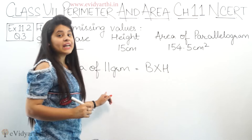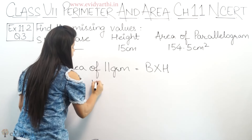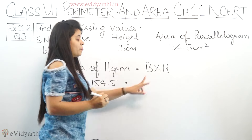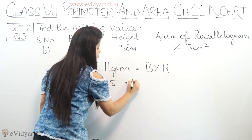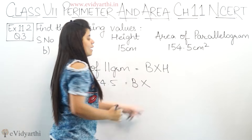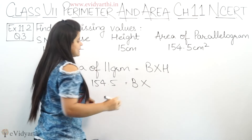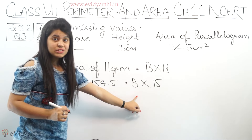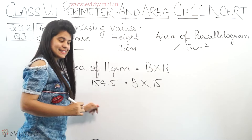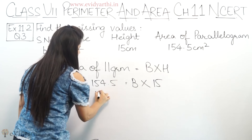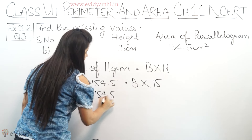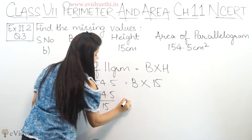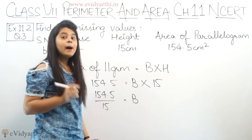Now area of parallelogram is given: 154.5 equals to base (not given), so we write b, multiplied by height which is given as 15. Now to find the base, height will go to the other side and divide. So it becomes 154.5 upon 15 equals to base.